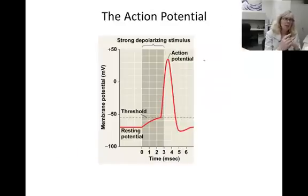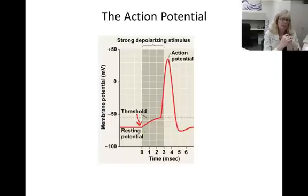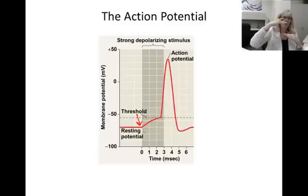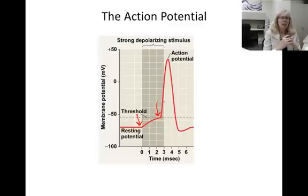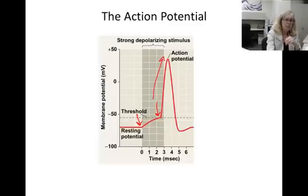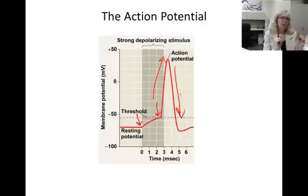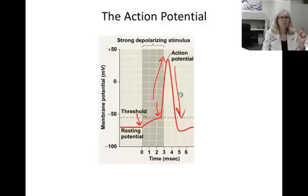A strong depolarizing stimulus that causes the inside of the membrane to depolarize can sometimes make it depolarize up to a level called threshold. At this threshold level, a cascade of changes causes a spike of depolarization and then repolarization that lasts just a few milliseconds. This increase and then decrease is the action potential.